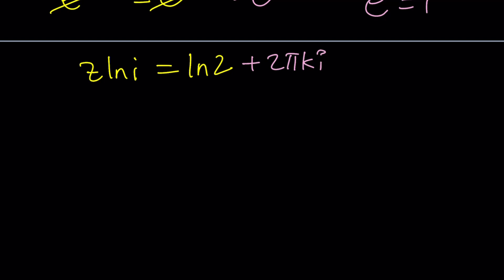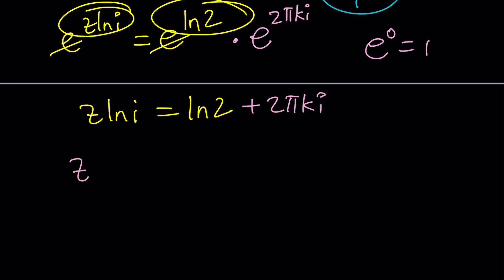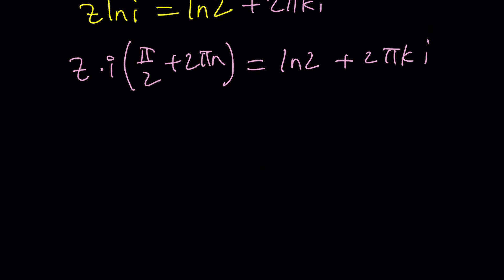First of all, I want to replace ln i with what it is. ln i is going to be i times π over 2 plus 2πn. And that's ln 2 plus 2πki. And then we're going to go ahead and divide both sides by this. Z equals ln 2 divided by i times π over 2 plus 2πn. And then 2πk will be divided by...